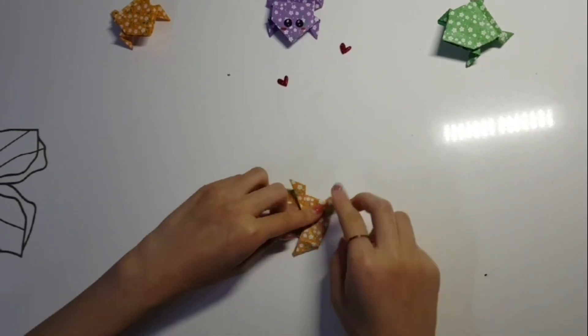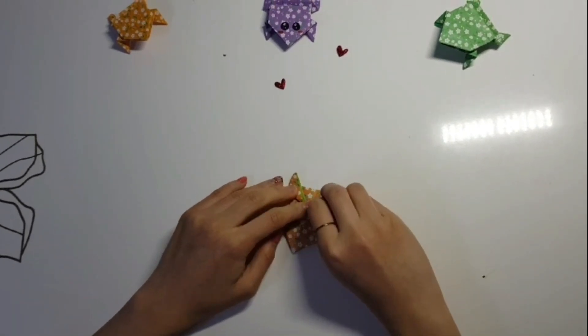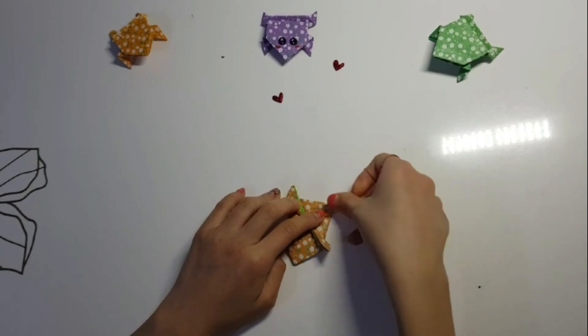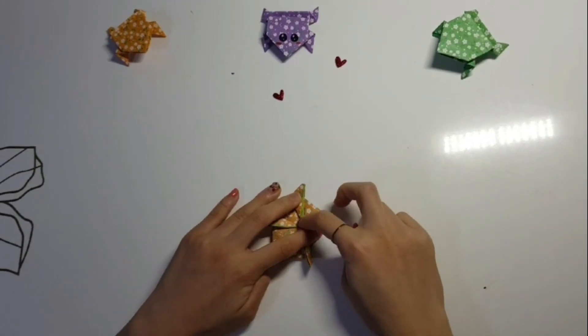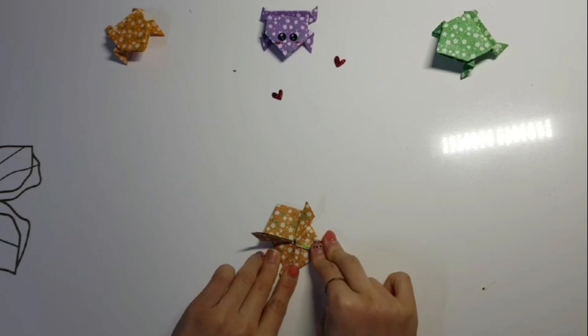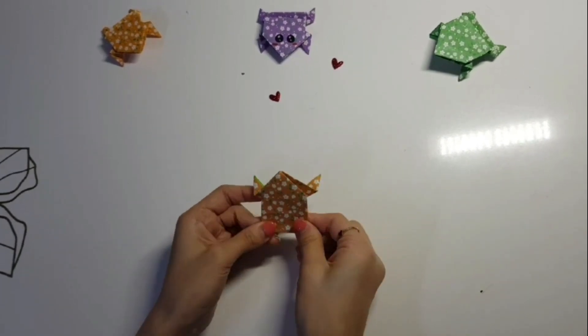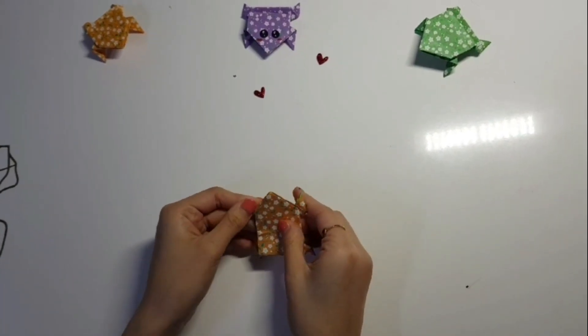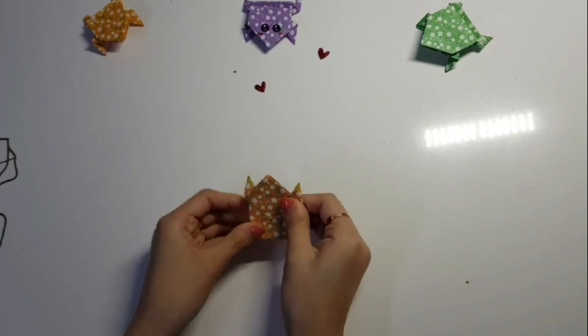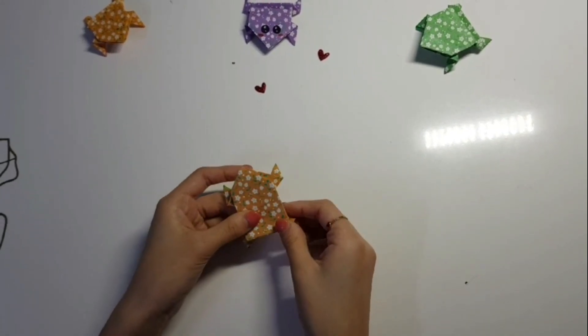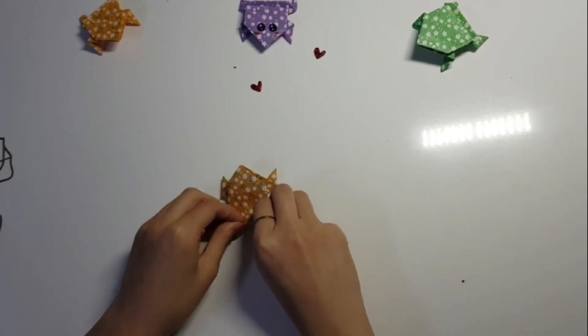Next, fold down to the crease of the legs. And that's the end of how you make a jumping frog.